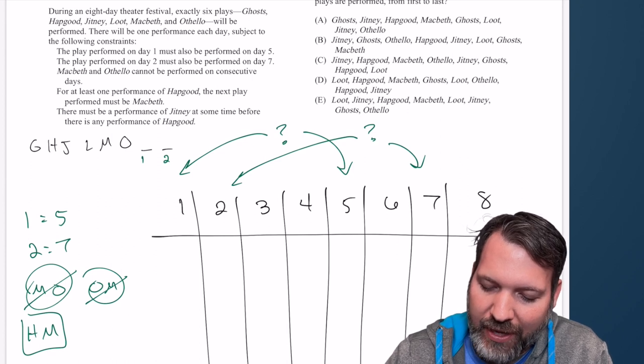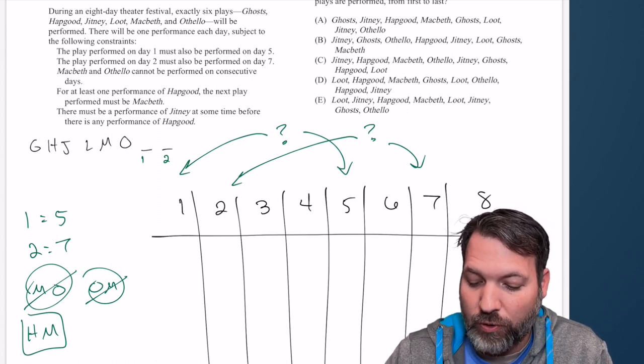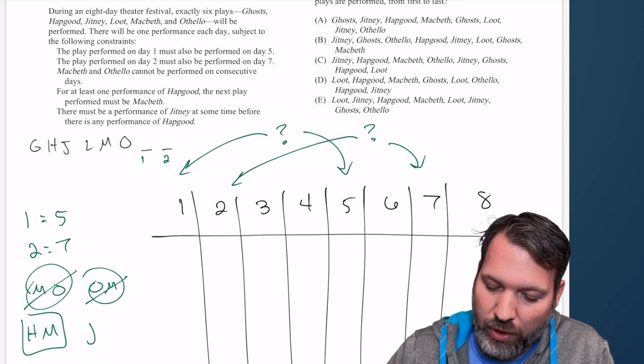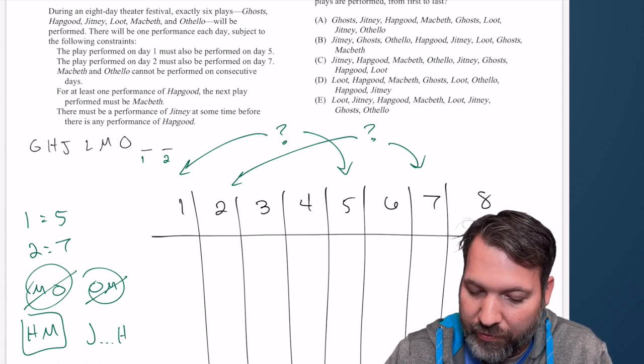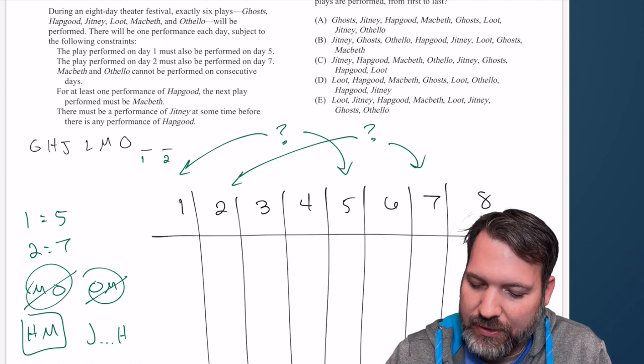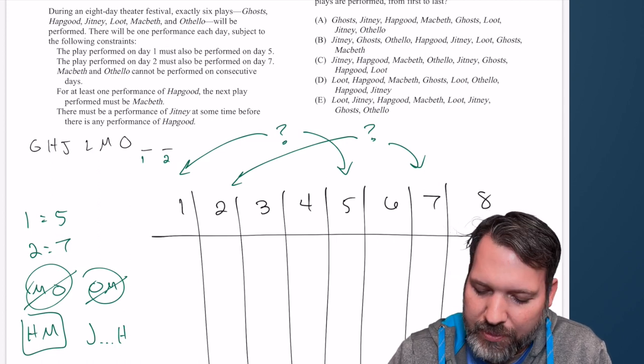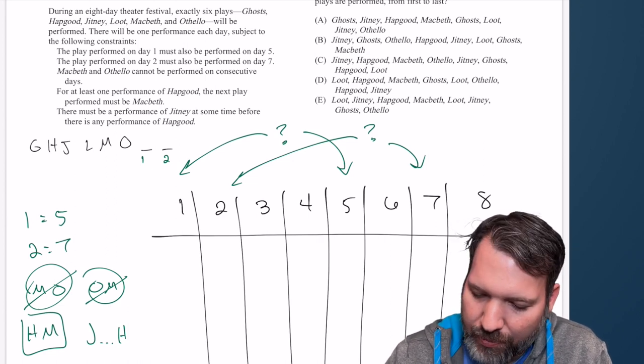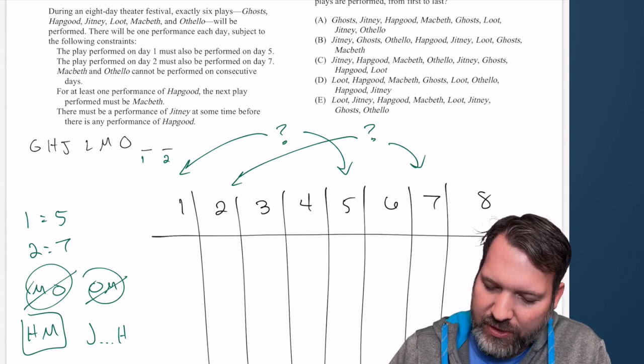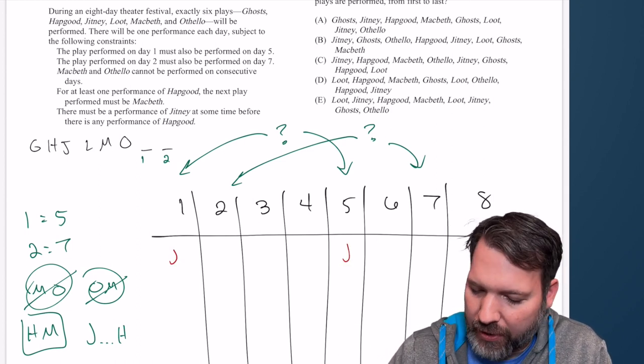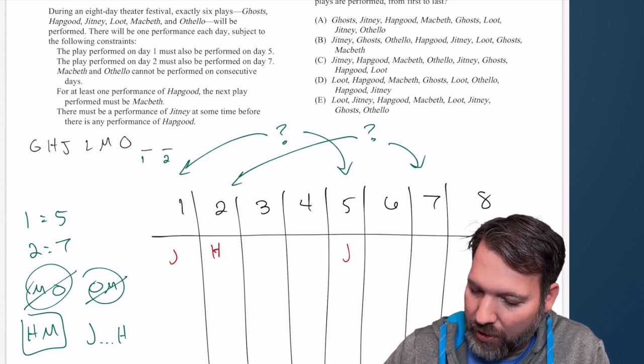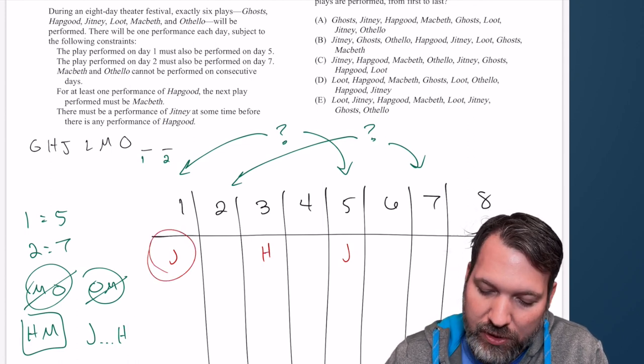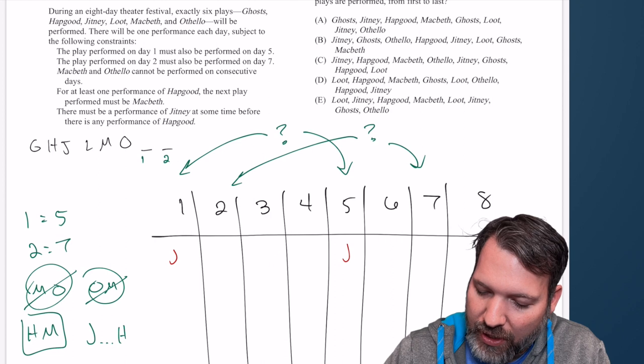So this doesn't mean Hapgood must go twice, and it definitely doesn't mean Macbeth goes twice, but it means somewhere that we see H, we're going to have to see M follow up right behind. Now, unfortunately, this is going to mess up our typical deduction we get from a block clue. There must be a performance of Jitney at some time before there is any performance of Hapgood. So for sure, one of the Js, if it does go more than once, must be before any H whatsoever. You could easily imagine a scenario where J and H each go twice, and it could be something like J goes twice here in one and five, and then H ends up something in like two and seven if it goes twice, but it could end up just going once in between the two as long as there is one performance of Jitney before H.